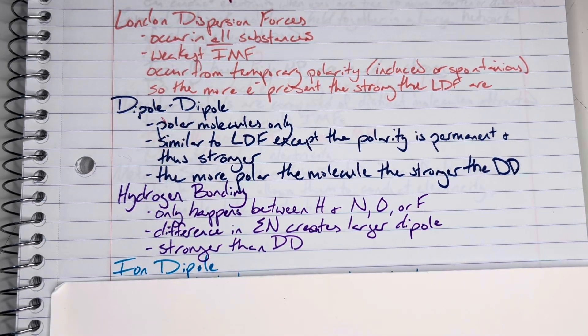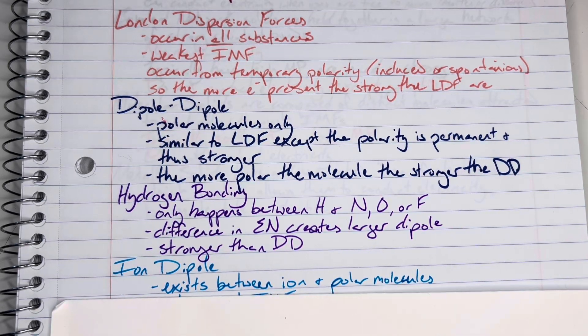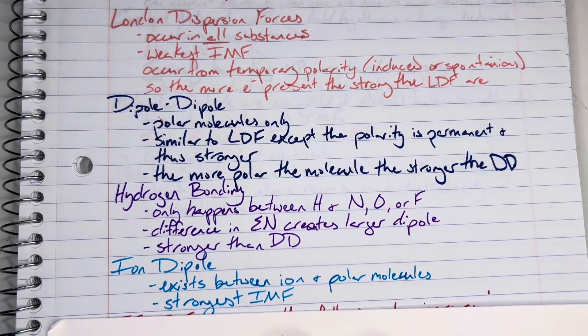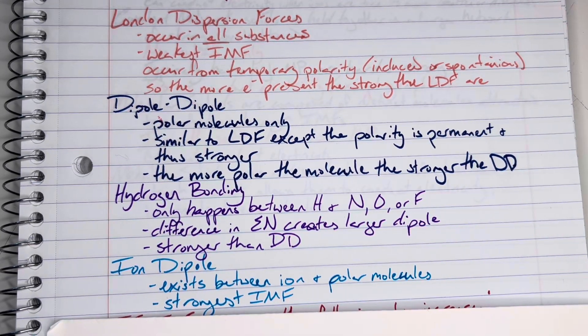Next up is ion-dipole. Ion-dipole exists between an ion and a polar molecule, and it is going to be the strongest of the true intermolecular forces.